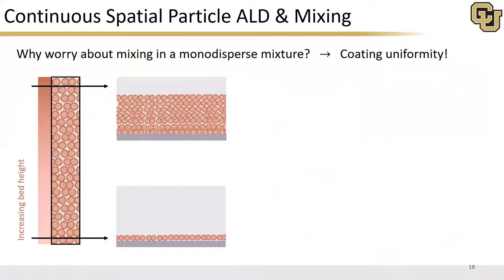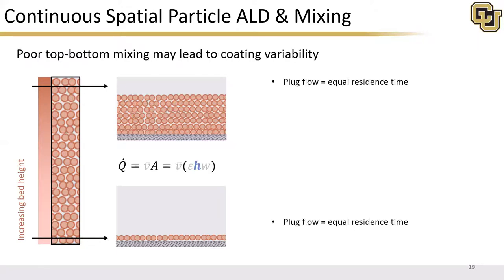You may wonder why worry about mixing in a monodispersed mixture? If we don't have size or density differences, why would we be concerned about self-diffusion? The reason is that when talking about a reacting system with gas-solid reactions, poor top-bottom mixing can have implications on coating uniformity. When maximizing throughput — considering mass flow rate or volumetric flow rate — we are upper-limited by fluidization velocity, packing fraction constraints limiting void fraction, and reactor geometry limiting plug width. The main adjustable parameter is bed height.